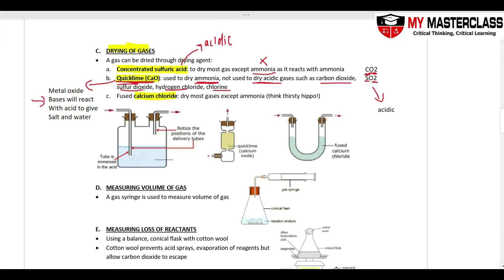Calcium chloride can be used to dry most gases except ammonia. In the experimental setups: for concentrated sulfuric acid, the gas bubbles through the liquid acid and exits dry. For calcium oxide, gas passes through the solid and is collected on the other side. For fused calcium chloride, gas enters, is dried as it passes through, and escapes out the other end.